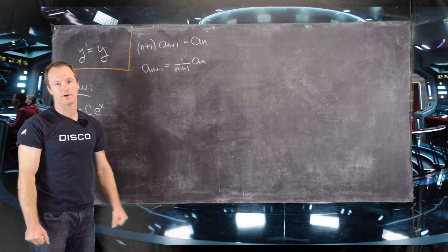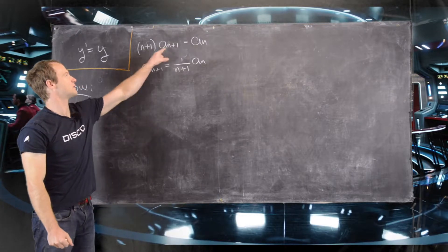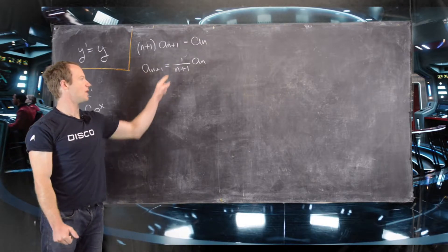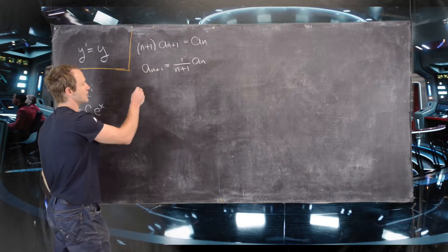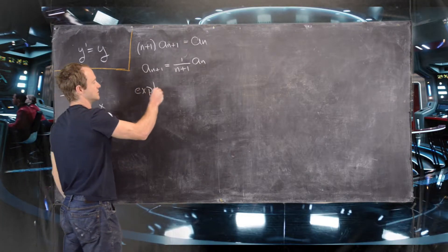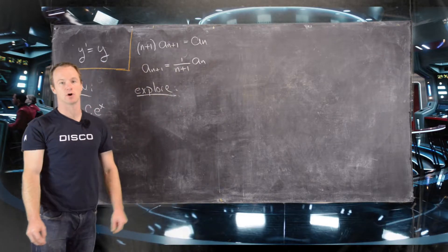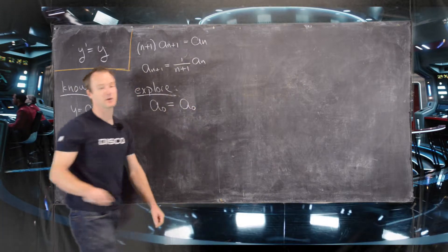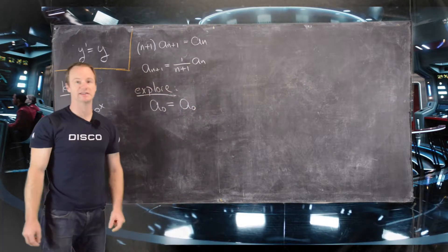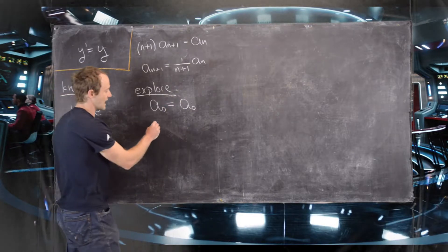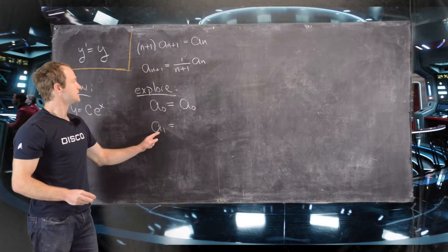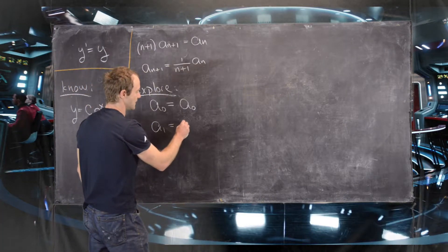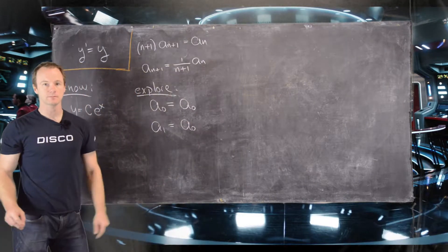We've determined the recursion: (n plus 1) times a sub n plus 1 equals a sub n, which we can rewrite as a sub n plus 1 equals 1 over (n plus 1) times a sub n. Now let's explore what these coefficients look like. Notice a sub 0 is free — there's nothing previous to write it in terms of. Then a sub 1 equals 1 over 1 times a sub 0, which is just a sub 0 itself.